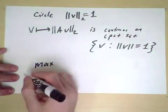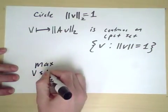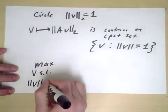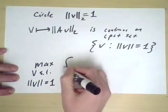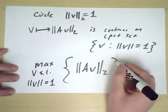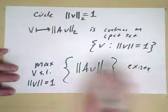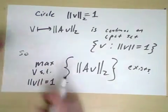So this number, the max over v, such that the length of v is 1, of these function values, exists and is obtained.